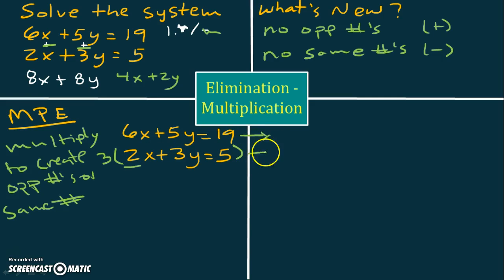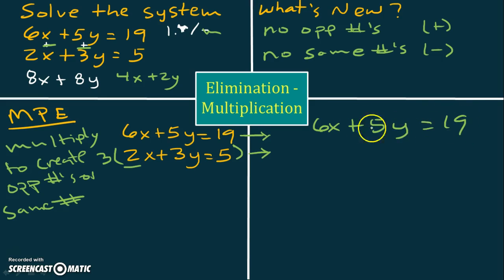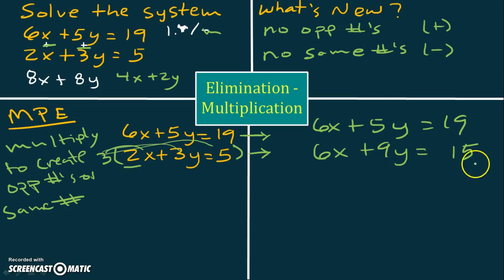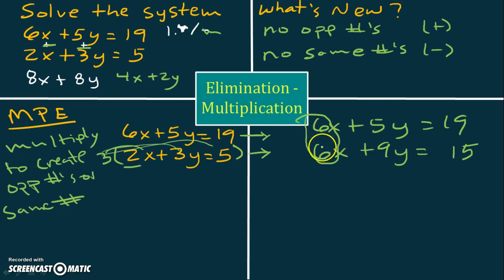So let's bring the top equation over unchanged, and multiply the bottom equation by 3 — there, there, and we make sure we multiply to the other side as well to use this property correctly. We get 6x plus 9y equals 15. Now that we've multiplied, the same number is present in front of x, and we can go ahead and do our second step which would be to subtract the same numbers. This is essentially what we're doing today.